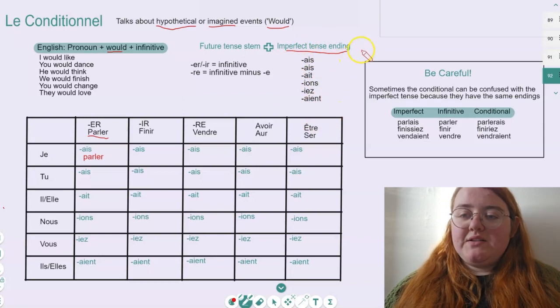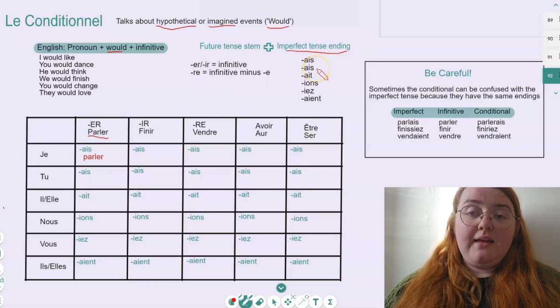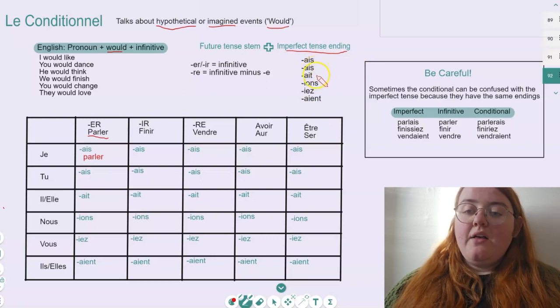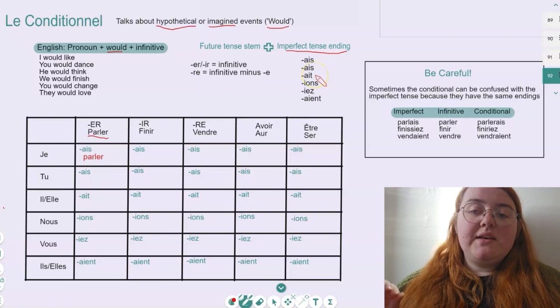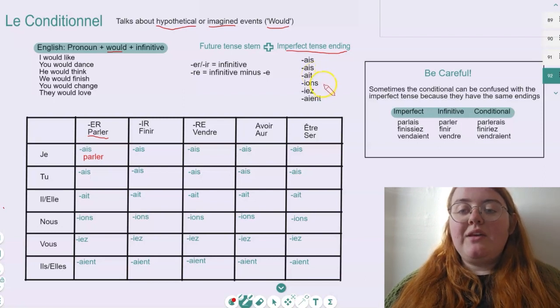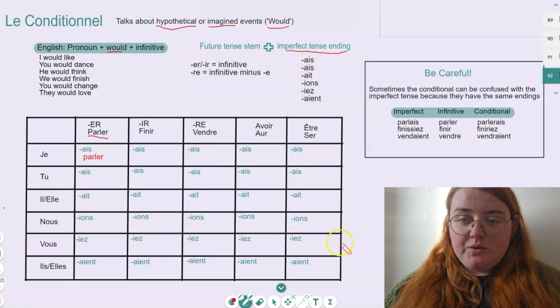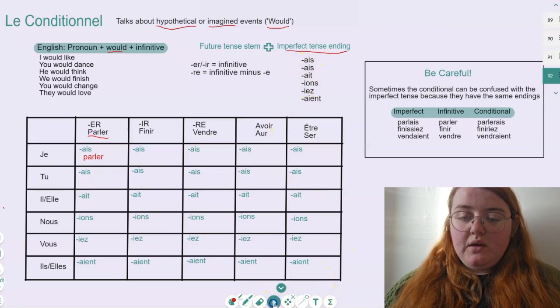So the imperfect tense endings go A-I-S, and then the same again, A-I-S. Then we have A with the exact same pronunciation, but with a T instead. Then we have I-O-N, then I-E-Z, and then I-E-N-T. So we've got these here just to remember.